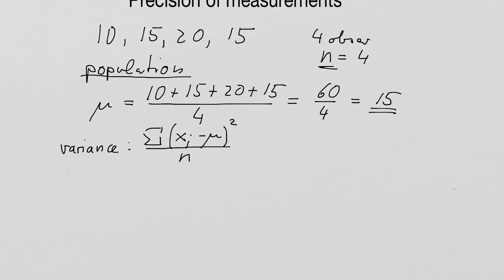Let's just simply do it. So our first observation is 10. We subtract the mean, that is 15, square it, plus the second observation is 15 minus the mean, square it, plus the third observation, 20 minus the mean, square it, plus the fourth observation, 15 minus the mean, square it, and then we divide it by the number of observations, which is 4.